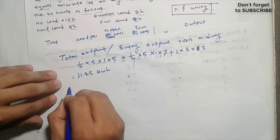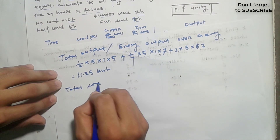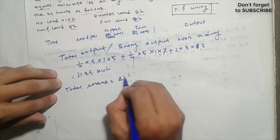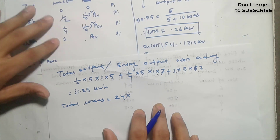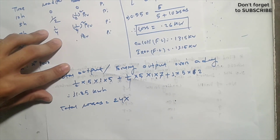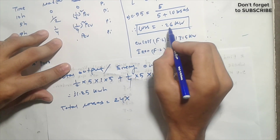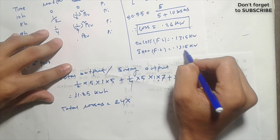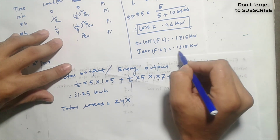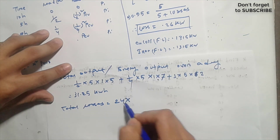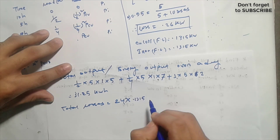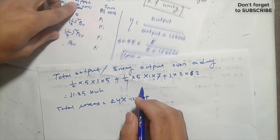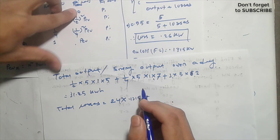Now we calculate the total loss. The iron loss is fixed. The iron loss value is 1.315 kilowatts. This remains constant across all load periods.